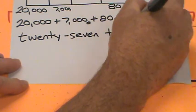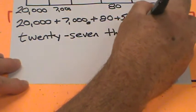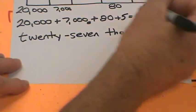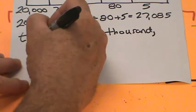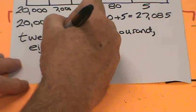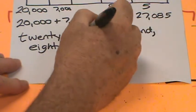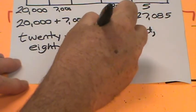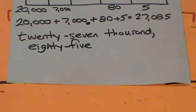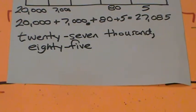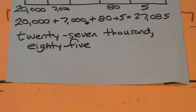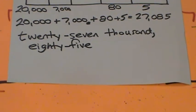In word form, we write: twenty-seven thousand, comma, eighty-five. We put a little hyphen in there when we talk about these types of numbers — eighty-five. So there we have it: that is word form, just like you thought it would be. Let's continue on.